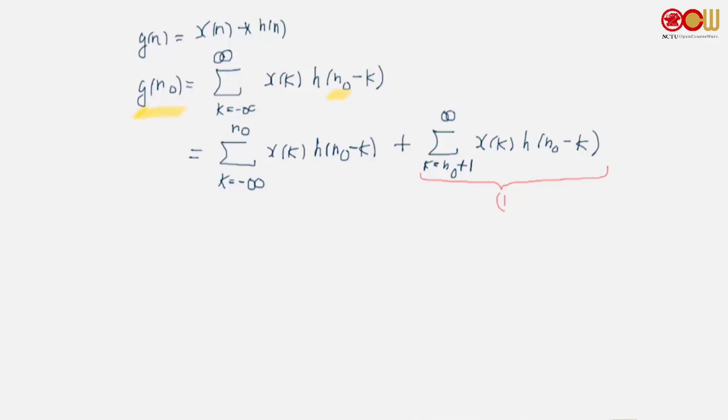So let's write down 1 to see what it's like. When k = n0+1, we have x(n0+1) and then h(-1). When k = n0+2, the argument in h is -2, and then continue like this. So now we can see that the system is causal, the LTI system is causal, if all these h coefficients are equal to 0. If h(-1) = h(-2) = 0. That is, h(n) = 0 for all n < 0.